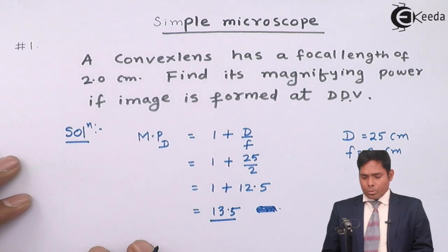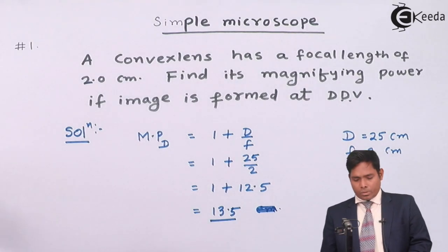Next, we will take one more question on microscope. Let us take one more question. A convex lens used as a simple microscope has focal length of 2.5 cm. The question is, question number 2: